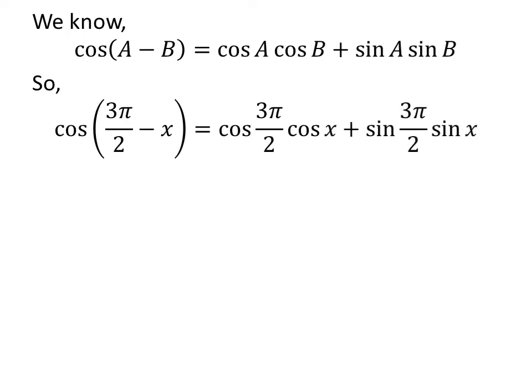Let us apply the above identity for cosine of 3 times pi upon 2 minus x. Here, A is 3 times pi upon 2 and B is x. So, cosine of 3 times pi upon 2 minus x is equal to cosine of 3 times pi upon 2 times cosine of x plus sine of 3 times pi upon 2 times sine of x.